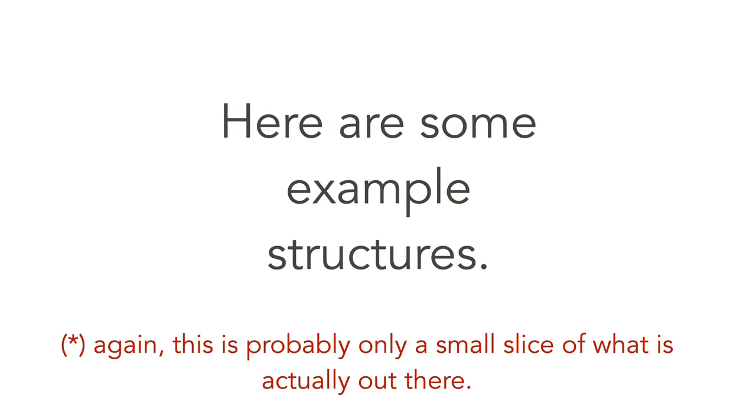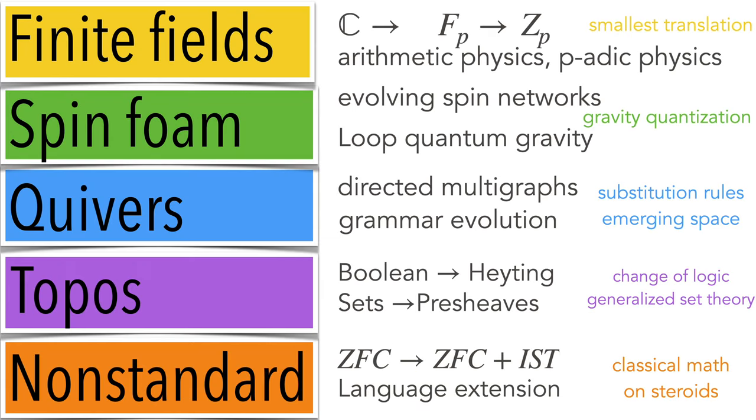Richard Feynman, who lectured at CERN to an audience which included Stueckelberg, said: Stueckelberg did the work and walks alone toward the sunset, and here I am covered in all the glory which rightfully should be his. It's sometimes difficult to assess when something is right, especially in physics when experiments are not yet available. I wrote recently a page about Stueckelberg; it's a fascinating story. Here are some example structures which are finite. Again, these are just a slice. There are finite fields mentioned with Kustaanheimo, spin networks considered by Penrose, directed multi-graphs in the Wolfram physics project, and some tried to enrich logic and mathematics using category theory like topos theory.